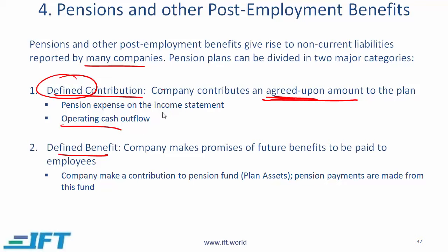The risk is transferred to the employee in a defined contribution plan because the company pays a fixed amount into the plan — if the plan does well that's good for the employee, if it does badly that's bad for the employee. The company washes its hands of the risk, and these plans are becoming much more popular worldwide relative to defined benefit.